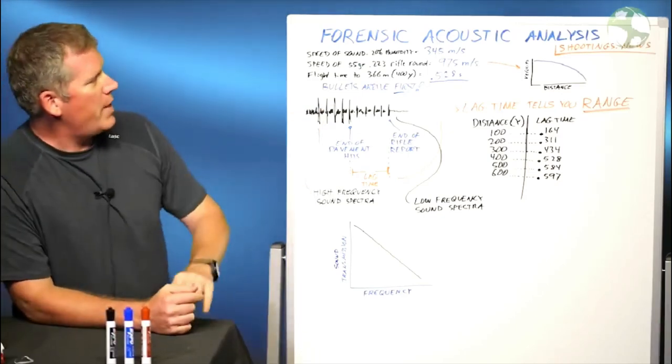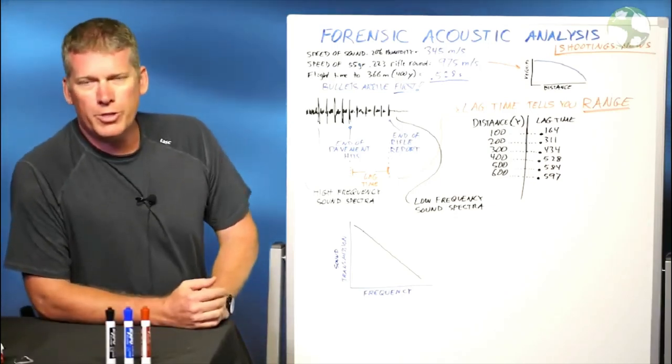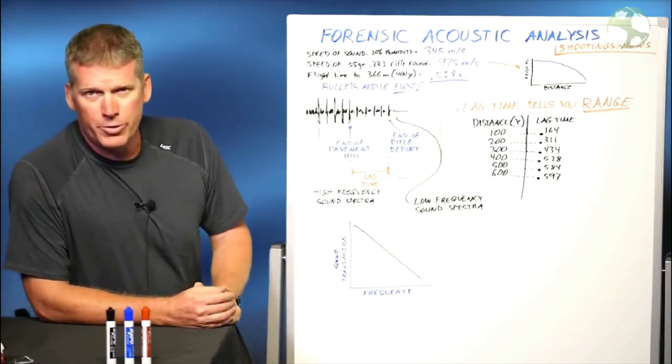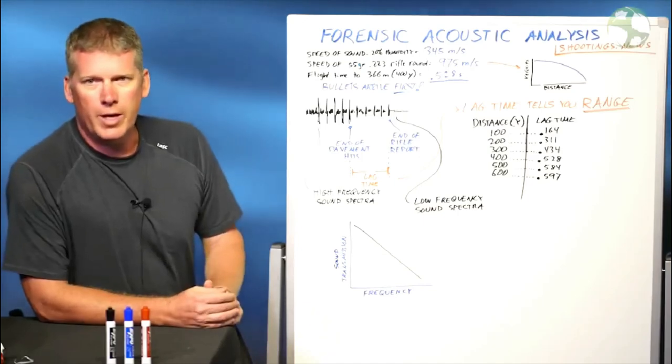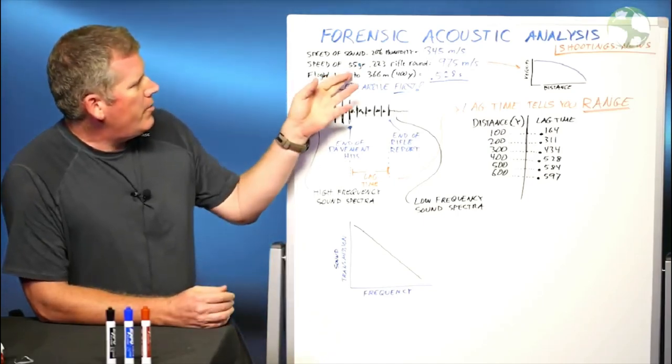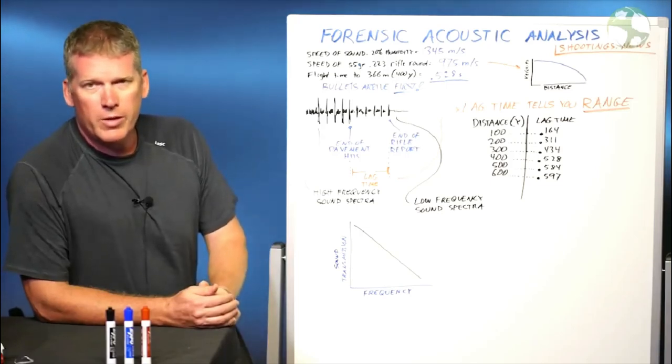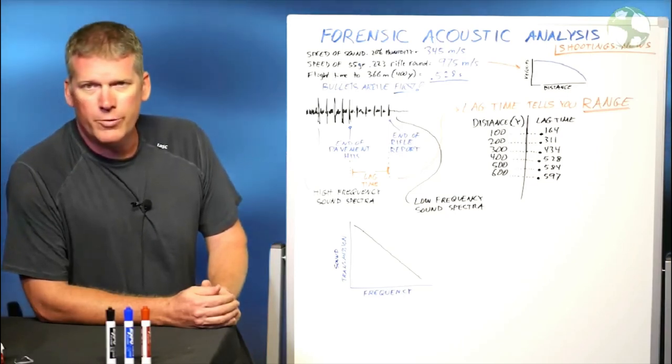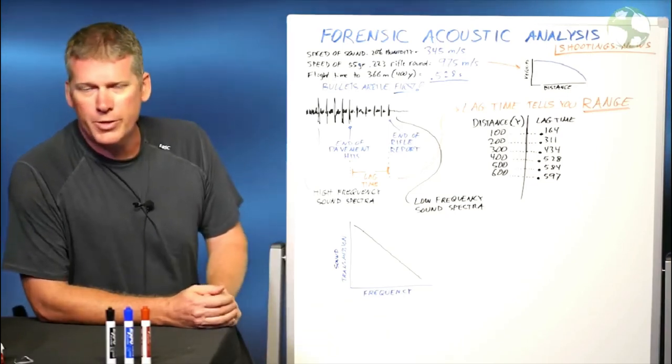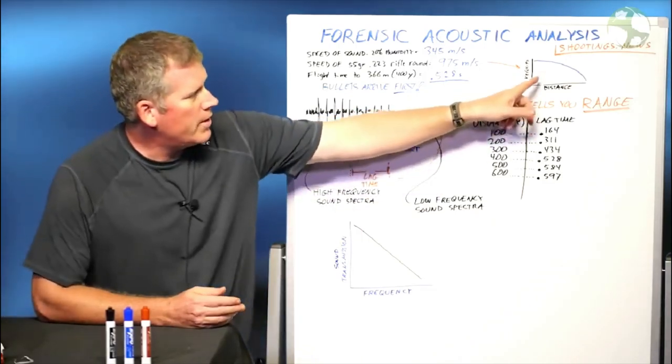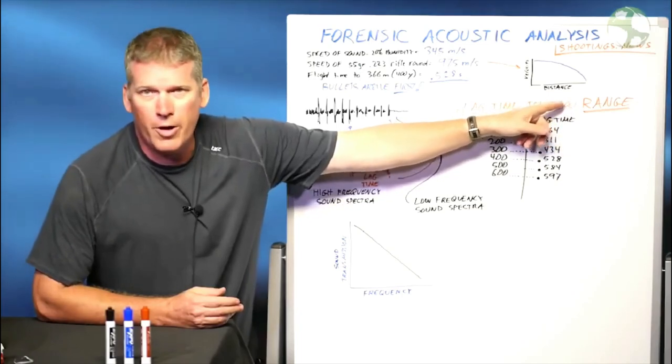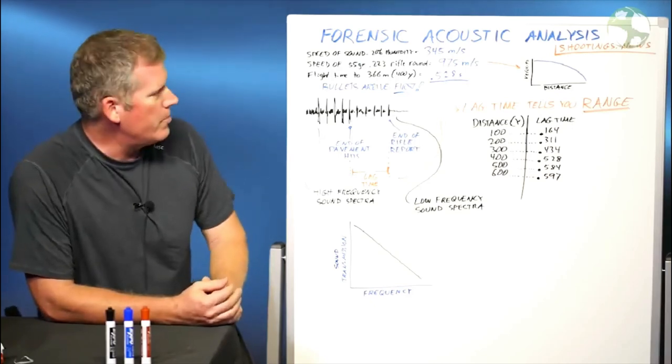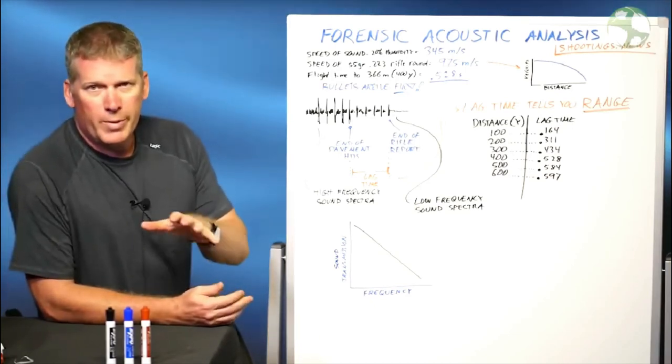First of all, let's cover some basic math here. The speed of sound at 20% humidity in Las Vegas temperatures is about 345 meters per second. I'm going to use the metric system here for all the obvious reasons. The speed of a 55 grain .223 Remington round leaving the barrel rifle is approximately 975 meters per second initial velocity. Now, those of us who are long range shooters, we know that velocity drops off very quickly according to a chart. It's velocity versus distance. So the farther the bullet flies, it loses velocity according to its ballistics coefficient or BC values.